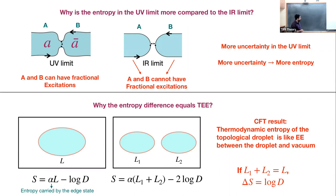Now, why is this entropy difference equal to log D? That is actually a deeper result. The original paper showed this using conformal field theory. What they showed was that if you take a topological droplet of size L — so L is the boundary of this droplet — the thermodynamic entropy behaves similar to TEE: there's a part linear in L, which is basically just the entropy carried by the edge states, plus a subleading constant log D. If I break this into two parts with L1 + L2 = L so the total length is preserved, you can see that the entropy difference will be log D.